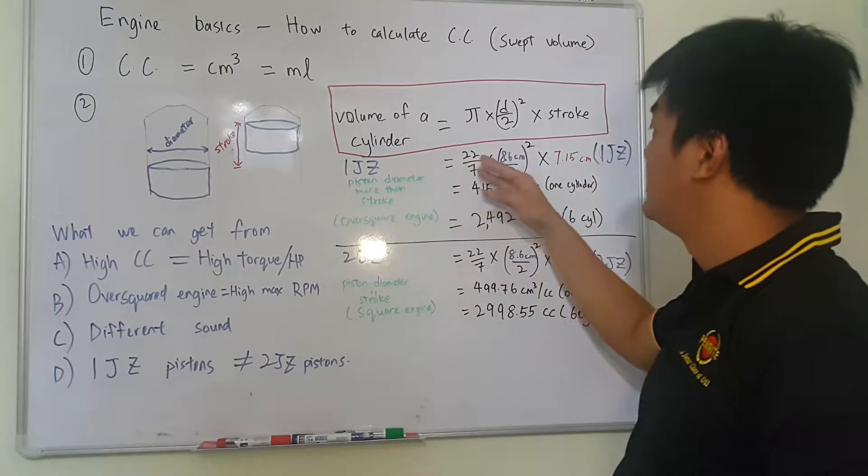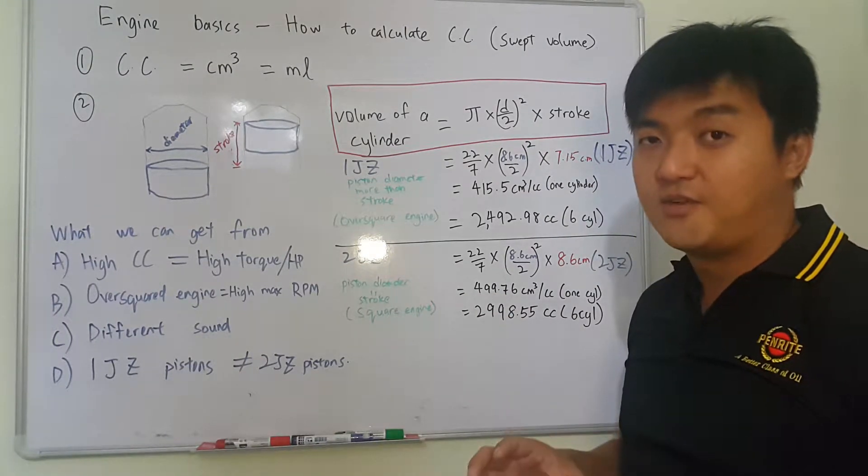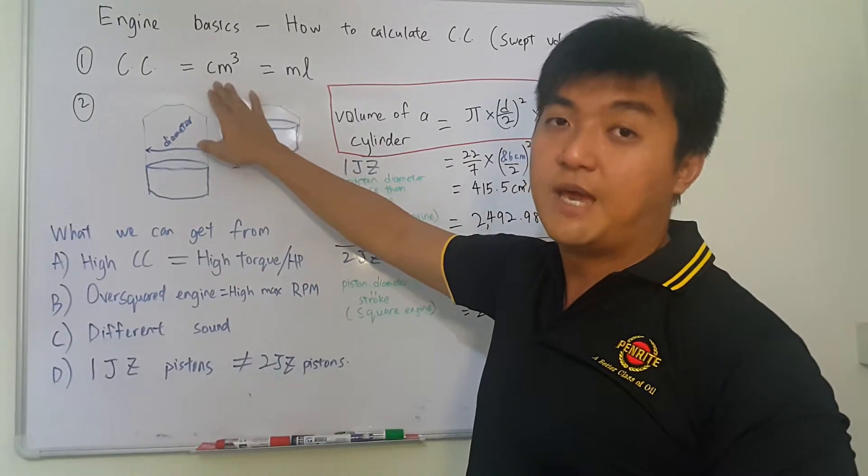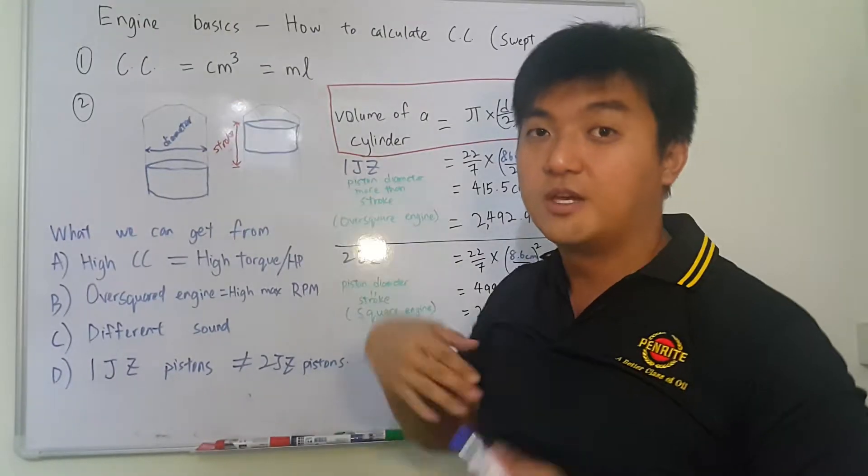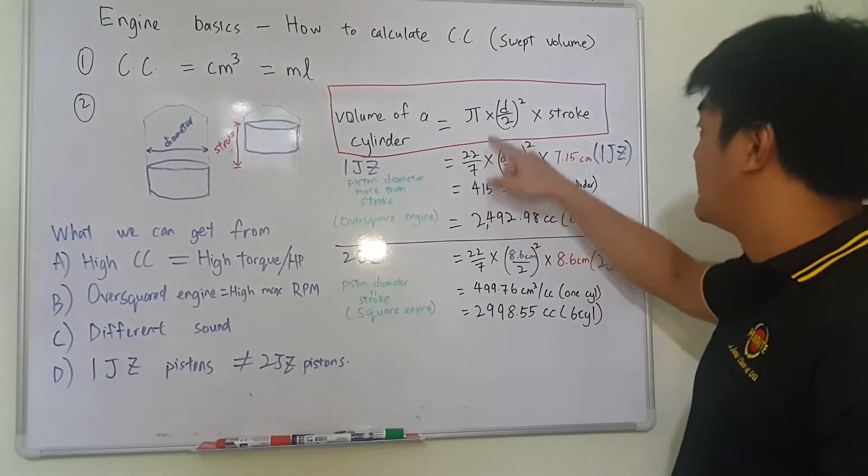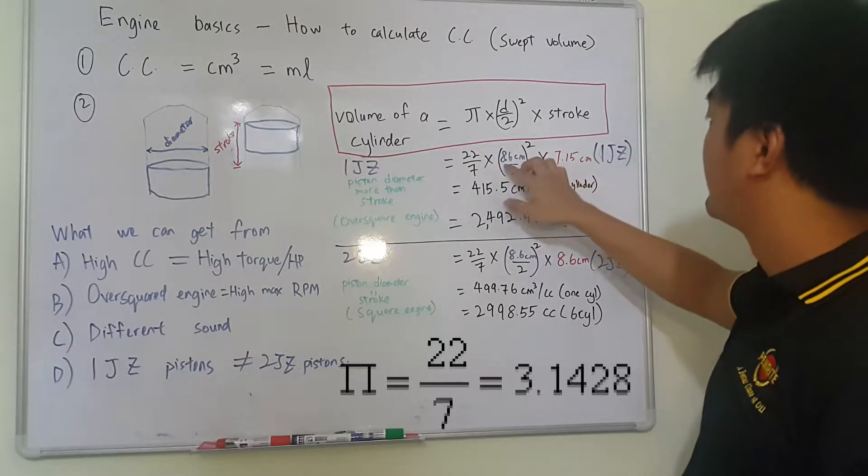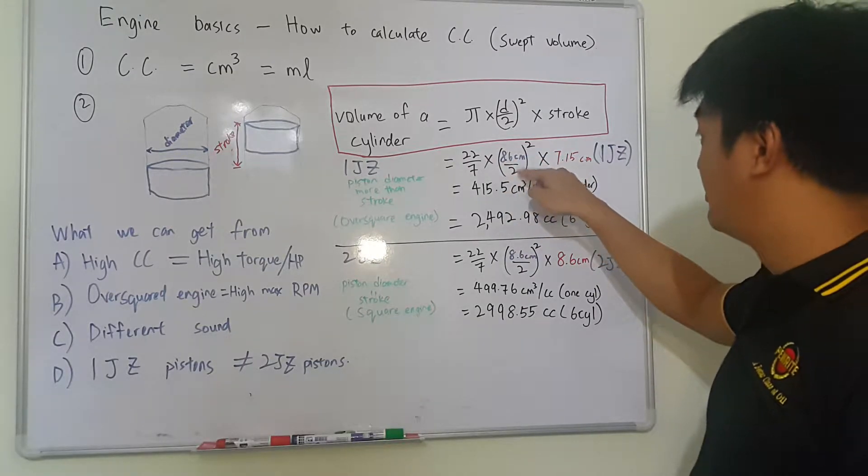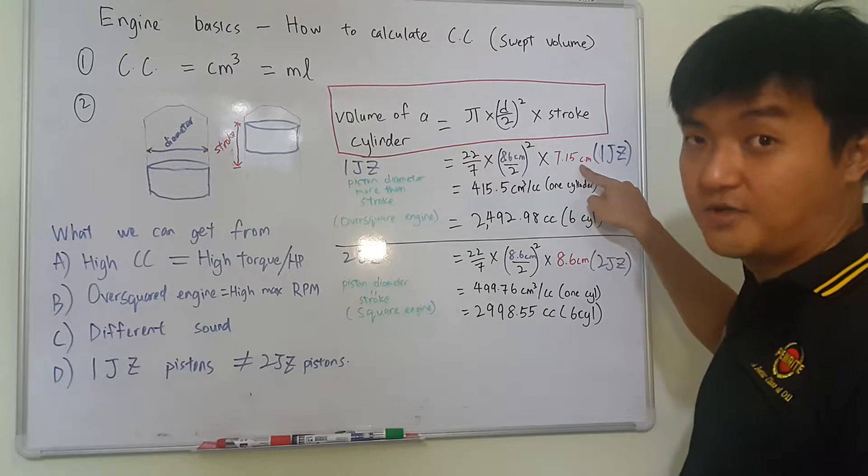So for 1JZ, the diameter of the piston is 86mm, the stroke is 71.5mm. But you need to be careful here because the CC is calculated in cm³, that means cm times cm times cm. So all the mm we have to change to centimeters first. So over here you can see π equals to 22 over 7, 3.14 times bracket, 8.6cm converted to centimeters divided by 2. Alright, squared times 7.15cm, the stroke is also converted to cm.